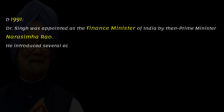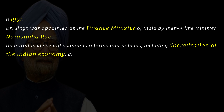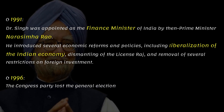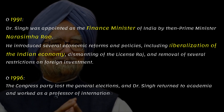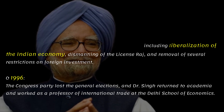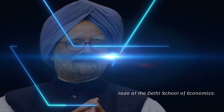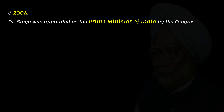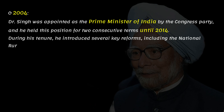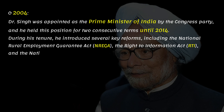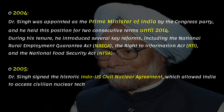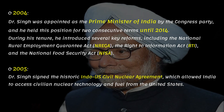In 1991, Dr. Singh was appointed as Finance Minister by then Prime Minister Narasimha Rao. He introduced several economic reforms, including liberalization of the Indian economy, dismantling of the License Raj, and removal of restrictions on foreign investment. In 1996, the Congress party lost the general elections and Dr. Singh returned to academia. In 2004, he was appointed Prime Minister and held this position for two consecutive terms until 2014, introducing the National Rural Employment Guarantee Act, the Right to Information Act, and the National Food Security Act. In 2005, Dr. Singh signed the historic Indo-U.S. civil nuclear agreement, allowing India to access civilian nuclear technology and fuel from the United States.